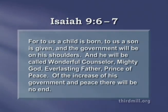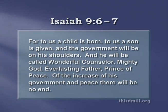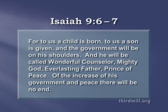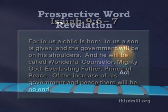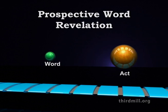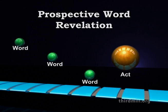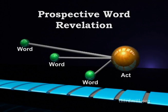At other times, God's prospective word revelation spoke of events in the distant future — so distant that those who first heard his word would not experience the event. For example, the prophet Isaiah spoke of the coming great Messiah in Isaiah chapter 9 verses 6 and 7: "For to us a child is born, to us a son is given, and the government will be on his shoulders, and he will be called Wonderful Counselor, Mighty God, Everlasting Father, Prince of Peace." Isaiah spoke of Jesus, the Messiah, but these words were spoken at least 700 years before Christ. They gave hope to God's people in Isaiah's day, but those who first heard this word revelation never even saw the divine action to which it referred.